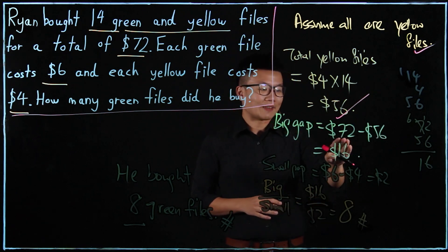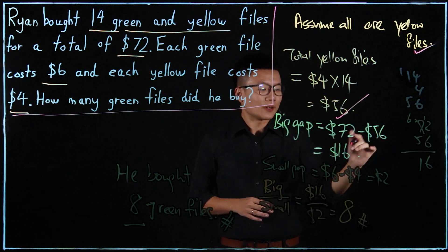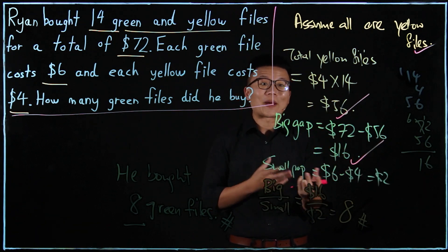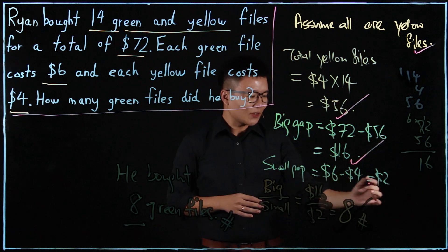So he found the total cost of the yellow files to be $4 by 14, which is $56. Next, he found a big gap, 72 minus 56. Looks good in order. Next, he found a small gap which is the difference between one yellow and one green file. So 6 minus 4, which is 2. Great.